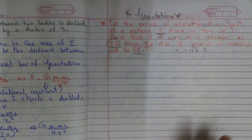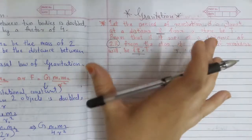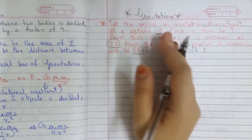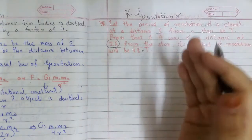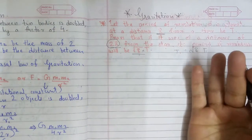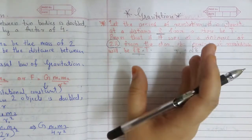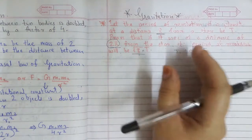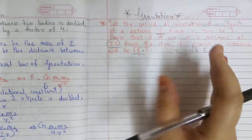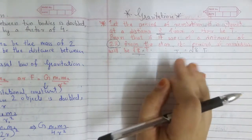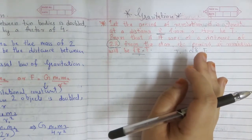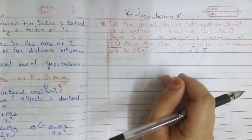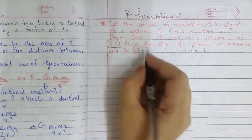Now let's prove this equation. To prove it, we will use Kepler's Third Law, which states that the square of the period of revolution is directly proportional to the cube of the distance between the planet and the sun.